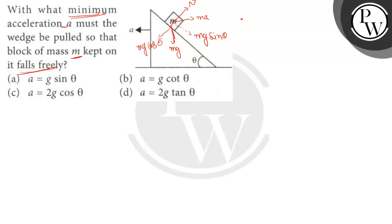ma has two components. This angle is theta. This is ma cos theta, and here is another force, ma sin theta. Now we write the equilibrium equation when the block is just kept on the wedge.